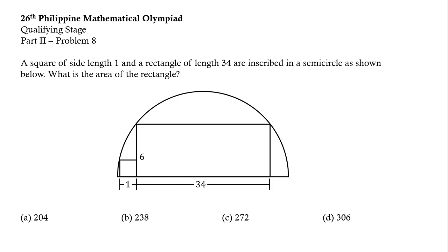So now we can solve for the area of the rectangle. This is just the product of 6 and 34. So the answer is 204 square units. And that is answer choice A.